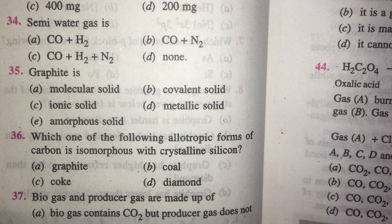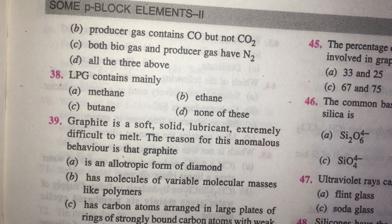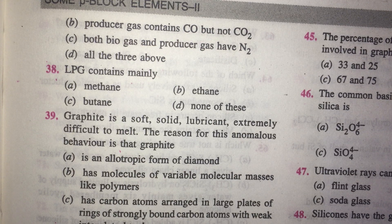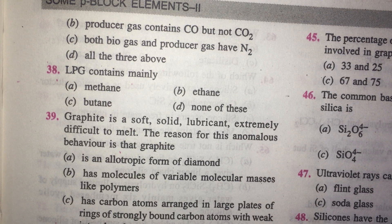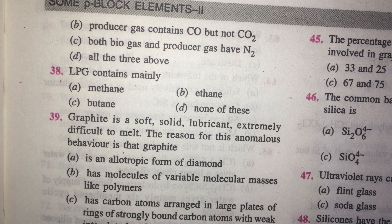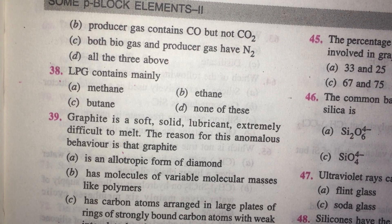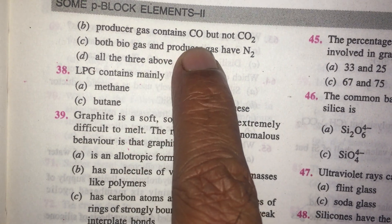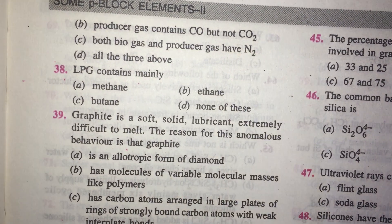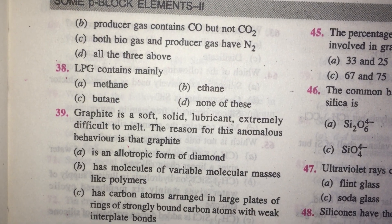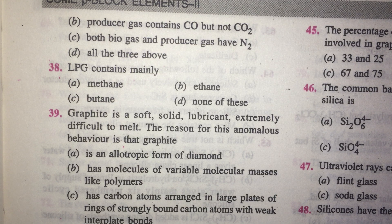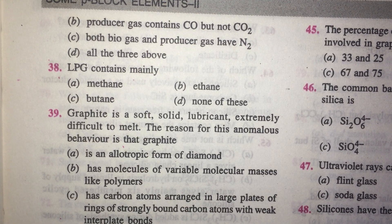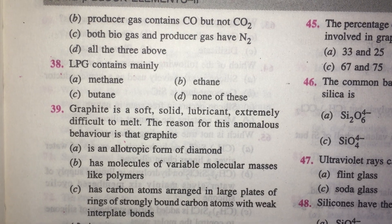Biogas and producer gas: producer gas contains CO but not CO2; both biogas and producer gas have N2. Producer gas does not contain carbon dioxide. LPG means liquefied petroleum gas; it is a butane and isobutane mixture. This is organic chemistry, but it is included here because we are talking about carbon.